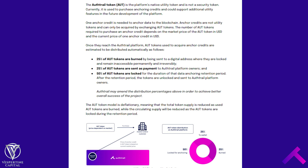The AUT tokens spent on anchoring credits are estimated to be distributed in the following way: 25% are burned, 25% are sent as a partial payment to AuthTrail, and 50% are locked for the duration of the anchoring retention period, after which they are sent to AuthTrail as the remaining payment amount. The burning and locking features of the AUT token make it deflationary. This means the stronger the platform's adoption and the more enterprises use AuthTrail for managing their data, the higher the value of the AUT token.